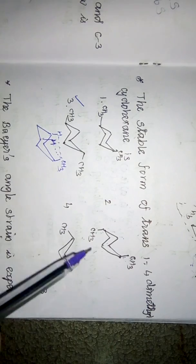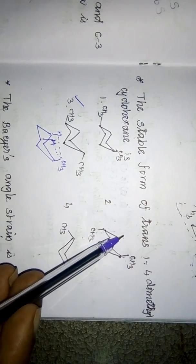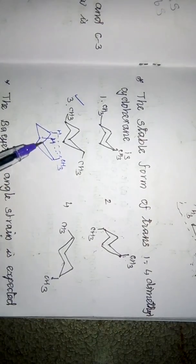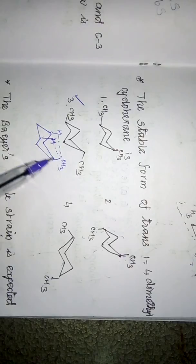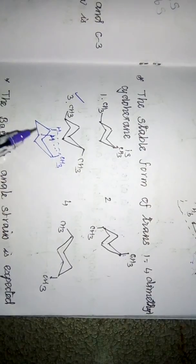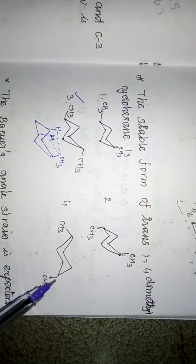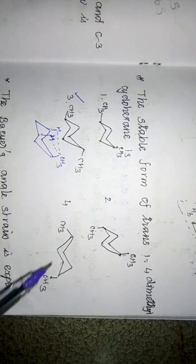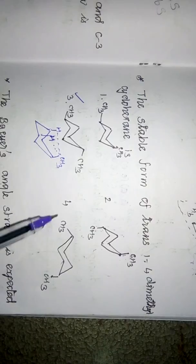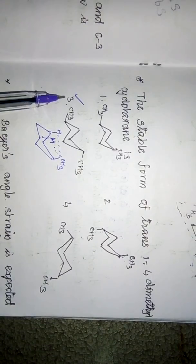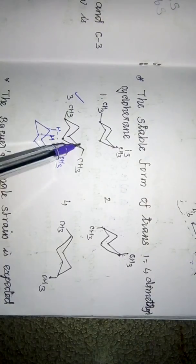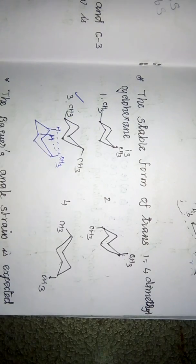Option 2 is a trans form, but it is not stable because the axial methyl groups experience 1,3-diaxial interactions. Option 4 has the first methyl axial and the fourth equatorial, giving a cis form. In option 3, both methyl groups are in the equatorial position — this is a trans form with no diaxial interactions, so this is the most stable form.